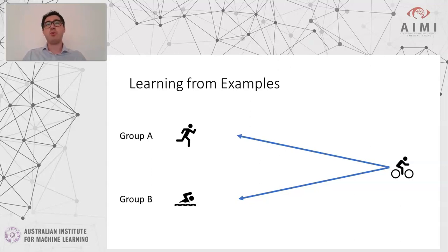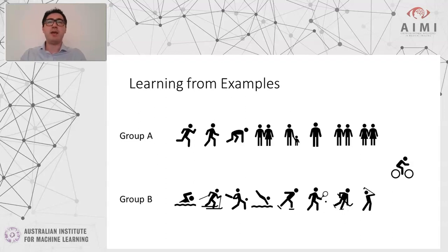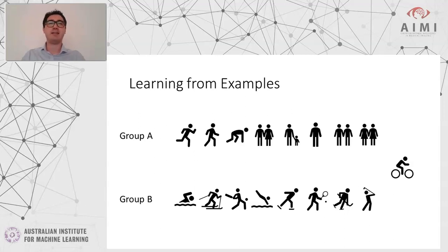But if I show you more examples for group A and group B, you may understand that the concept is a little bit different. So group A is just related to people and group B is related to sport. So now we have a much better understanding that we have to put this guy on this bike on group B.